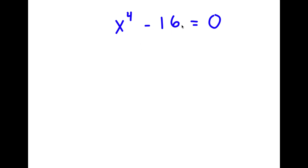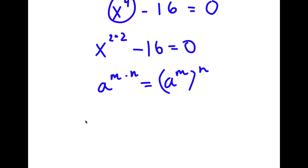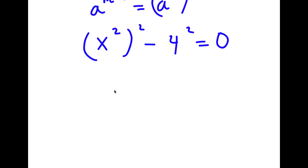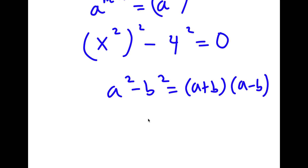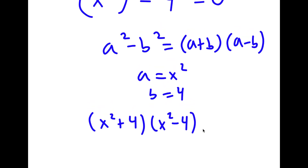In this problem, I have x to the power of 4 minus 16 is equal to 0. I'm going to rewrite x to the power of 4 as x squared to the power of 2, and 16 as 4 squared. Using the difference of squares rule — a squared minus b squared equals (a plus b)(a minus b) — where a is x squared and b is 4, I get x squared plus 4 times x squared minus 4 equals 0.